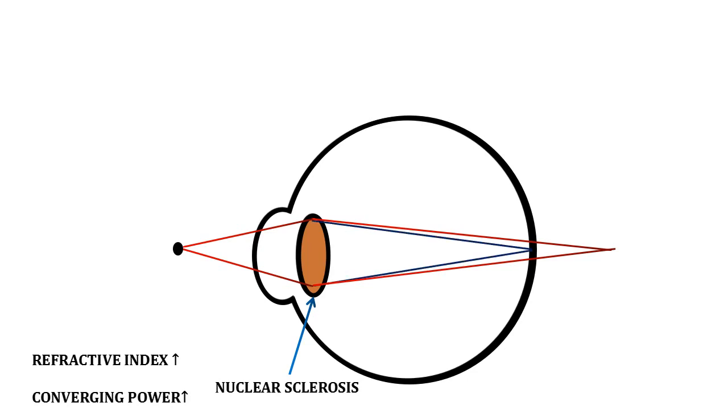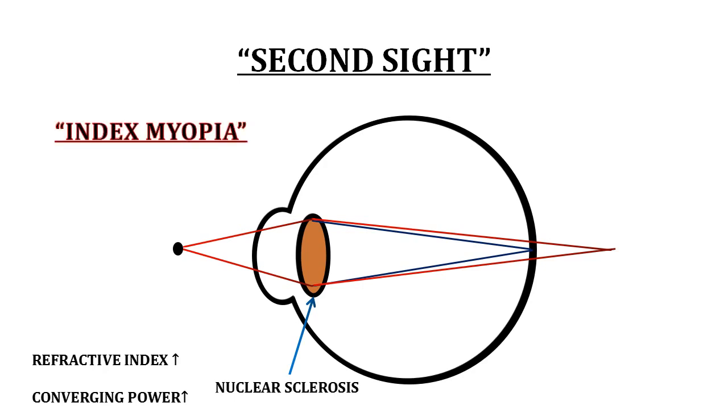This neutralizes the hyperopia that was caused by presbyopia. And this patient who is above 40 years of age is now able to see clearly for near even without his glasses. So because of nuclear sclerosis, he has gained the near vision that he had lost previously due to presbyopia. That is why it is known as second sight. This increase in the refractive power of the lens because of increase in its refractive index is known as index myopia.